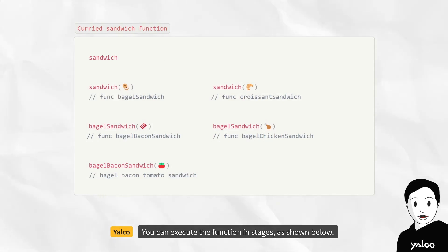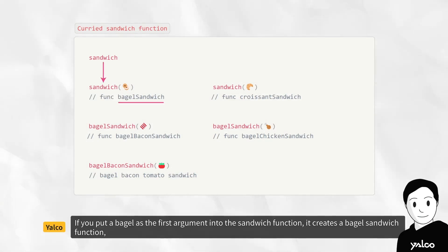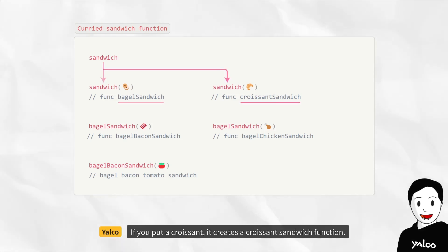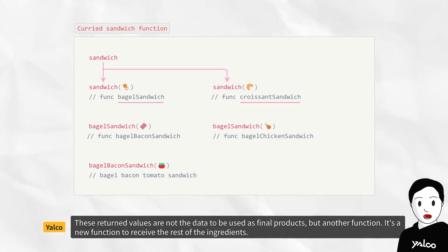You can execute the function in stages, as shown below. If you put a bagel as the first argument into the sandwich function, it creates a bagel sandwich function. If you put a croissant, it creates a croissant sandwich function. These returned values are not the data to be used as final products, but another function. It's a new function to receive the rest of the ingredients.